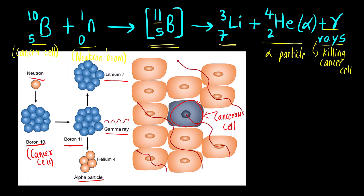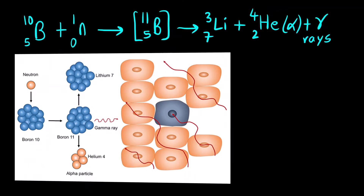The question is: is boron not absorbed by healthy cells? The answer is that it is absorbed in a very minimum amount. So overall, the cancerous cells are the ones which absorb the gamma rays to the maximum extent, and the damage to healthy cells will be very minimum. Boron atoms are selectively absorbed by the cancerous cell.